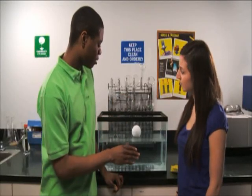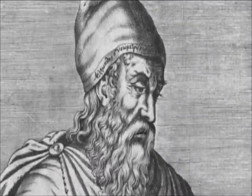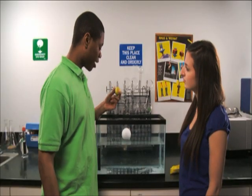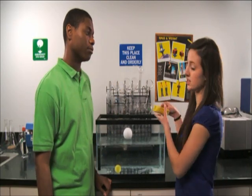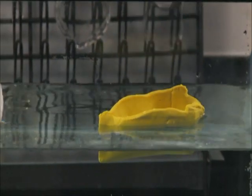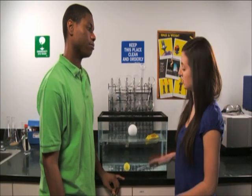While gravity pulls down, the buoyant force pushes up. Archimedes explained the principle of buoyancy in the 17th century. He said that the buoyant force is equal to the weight of the fluid or water that is displaced or occupied. Let's see if we can demonstrate. If I drop this ball of clay into the water, it will sink. But if we change the shape of the ball into something similar to a boat, it should float. That's because the new shape of the clay displaces more water. Therefore, the weight of the water is now heavier than the clay — it's less dense than the water, so it floated.